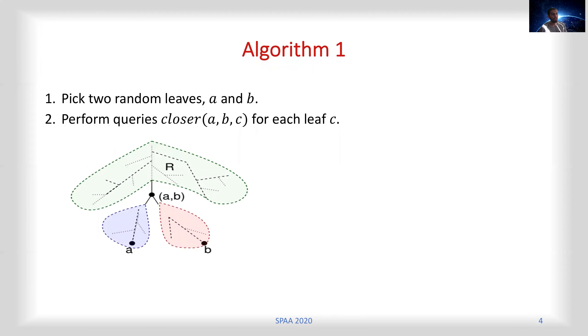The algorithm is very simple. It takes two arbitrary random vertices a and b at the beginning, and then performs queries closer(a, b, c) for each other leaf c to split all of the nodes into three sections according to their similarity to a or b, or if a and b is the most similar pair, then they reside in the remaining set R.